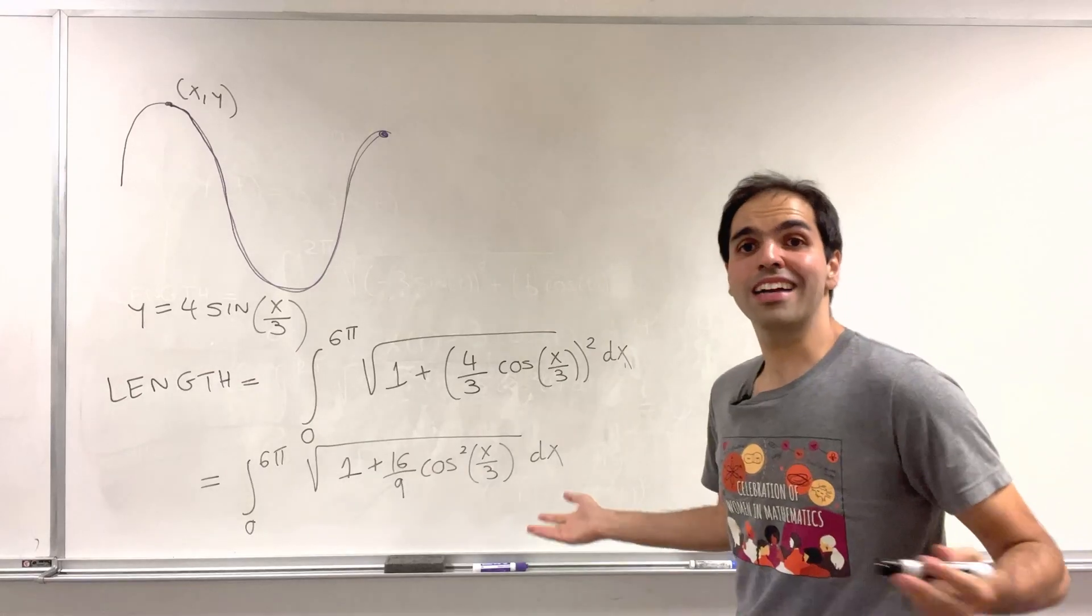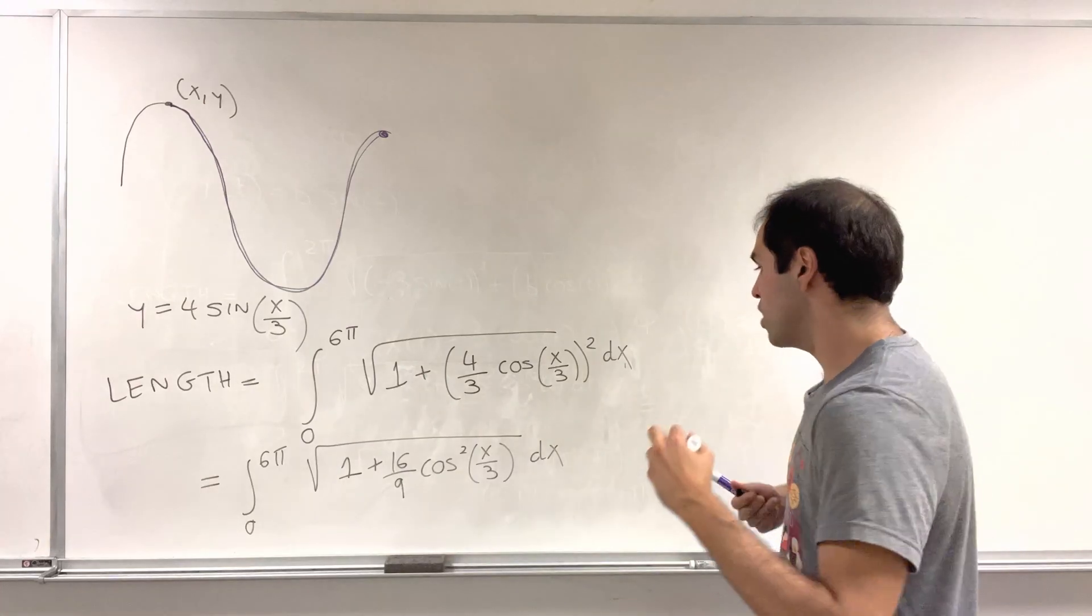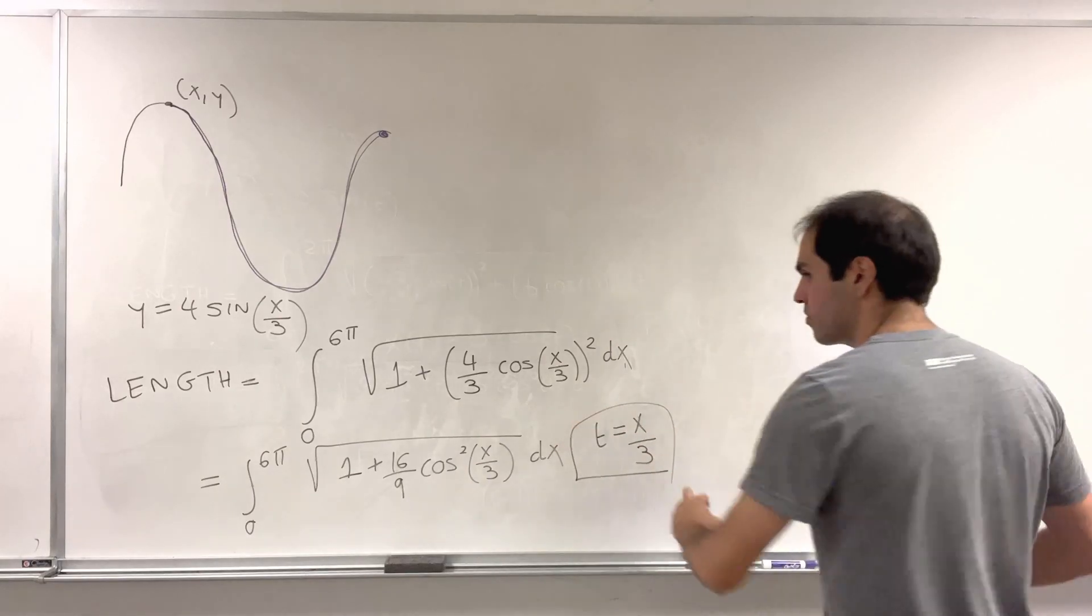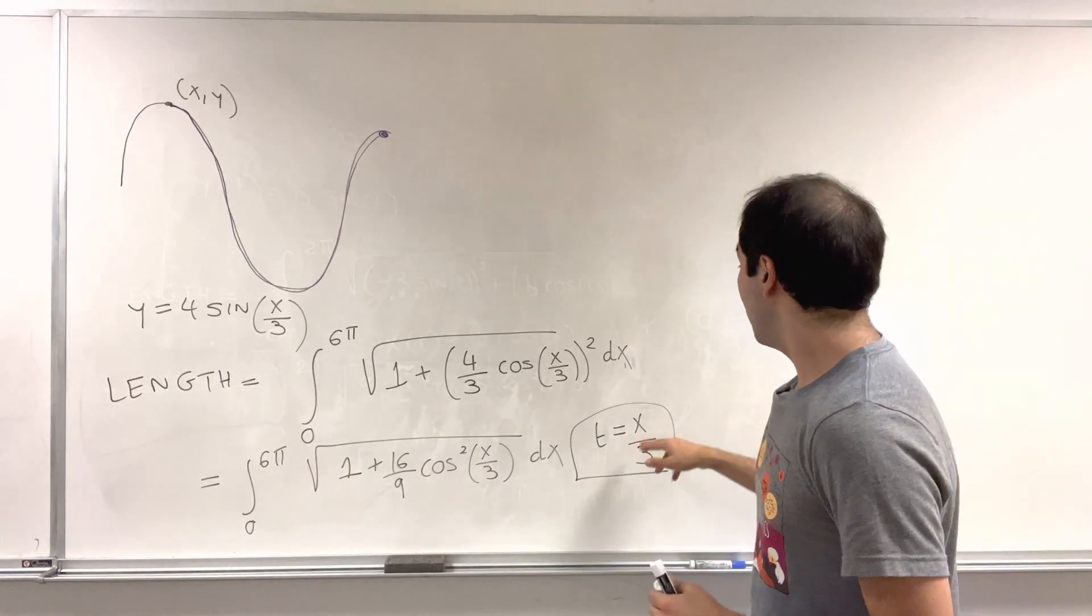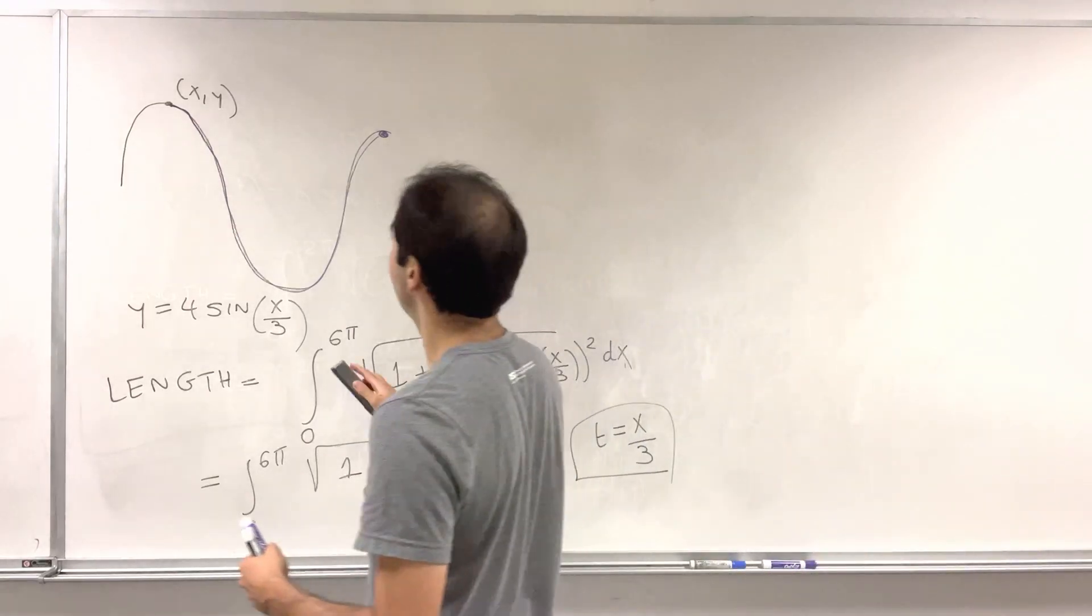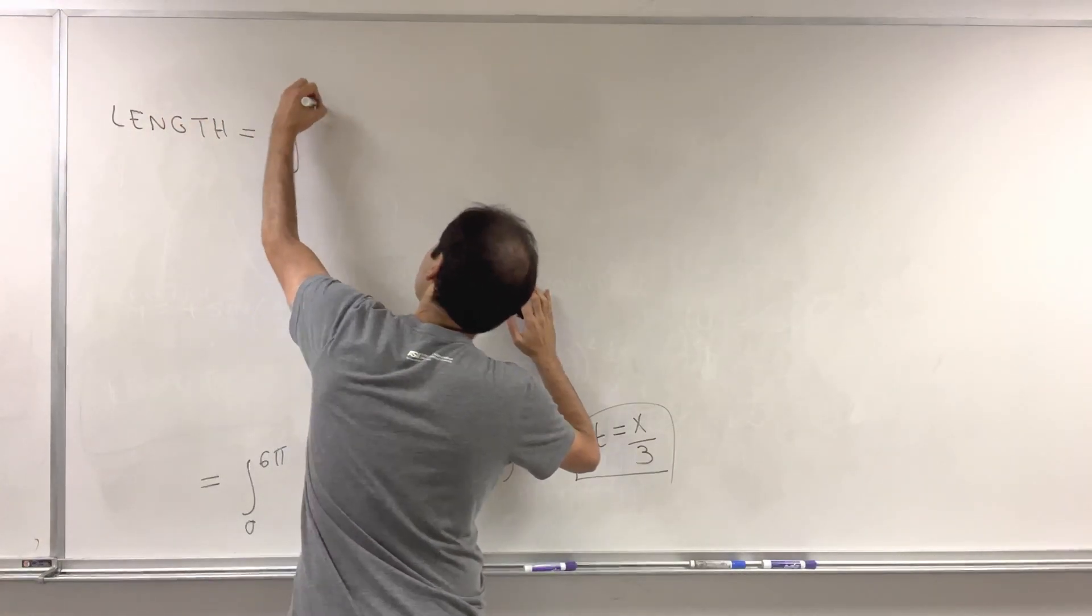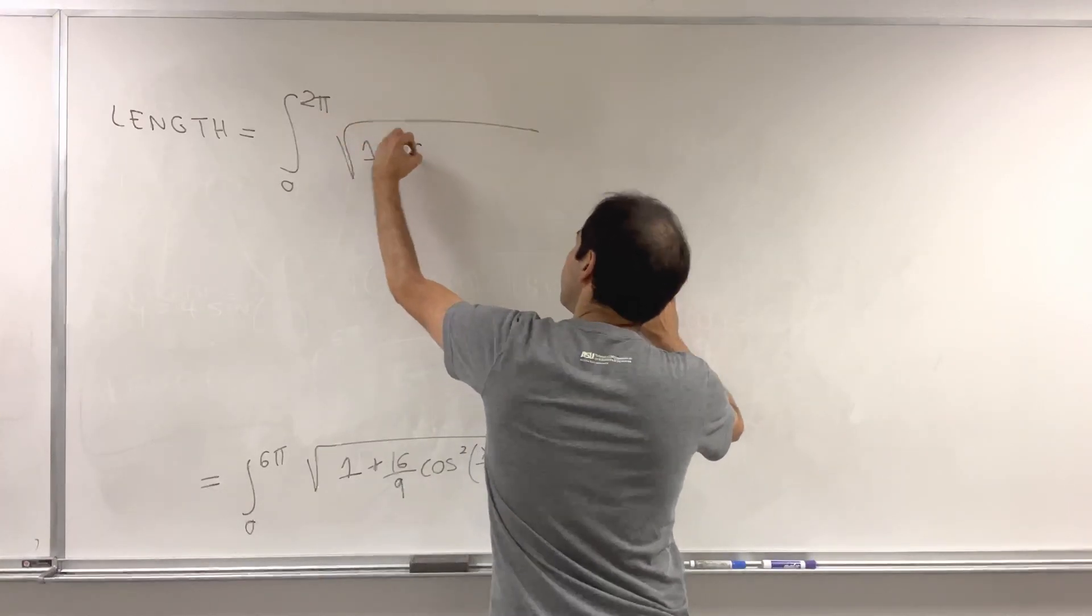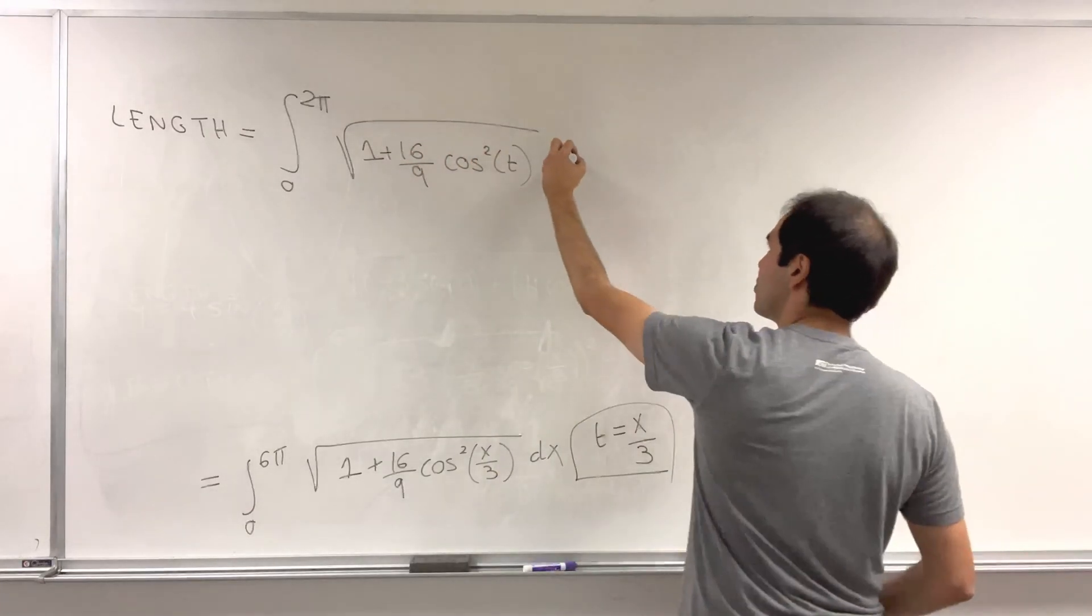But well, this looks kind of ugly with the 6 pi and this x over 3. So let's just do a u substitution, t equals x over 3. Then the 6 pi becomes 6 pi over 3, 2 pi. And then dx becomes 3 dt. And therefore, we get the following. So the length is the integral from 0 to 2 pi square root of 1 plus 16 over 9 cosine squared t. And then dx is 3 dt.